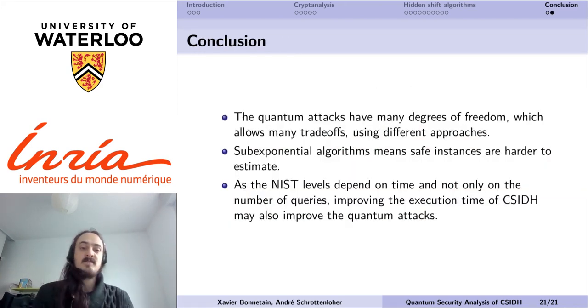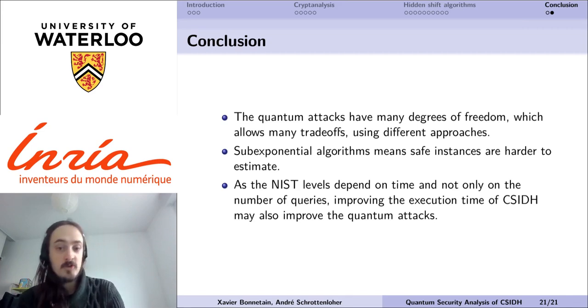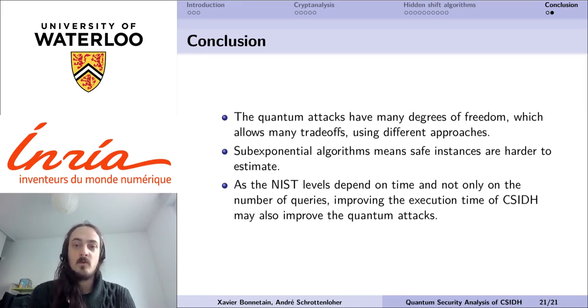To conclude, the quantum attacks on CSIDH have many degrees of freedom that allow us, depending on the amount of resources we consider, to trade between classical and quantum time, classical memory and number of qubits. As we have a sub-exponential algorithm, it means that the safe instances are harder to estimate, because a small change in the way we count the cost of the attack can lead to a significant change in the corresponding parameters.